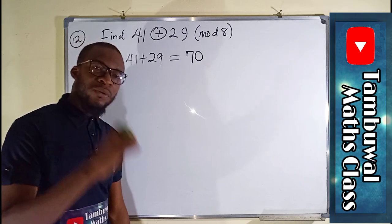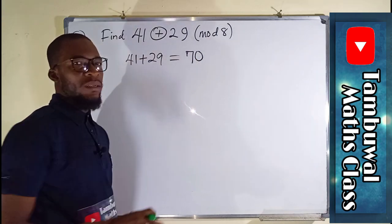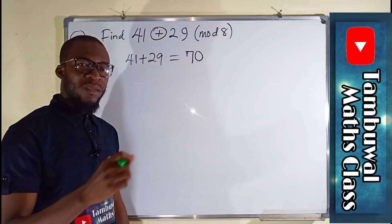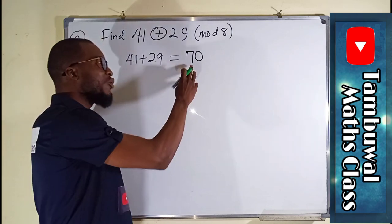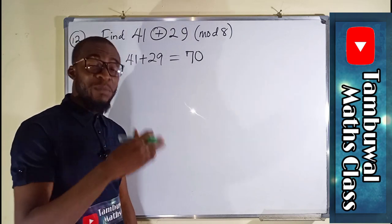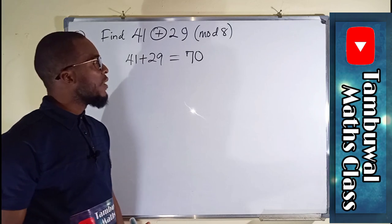8 plus 8 plus 8 plus 8. After a number closer to 70, in which the remainder is less than 8.